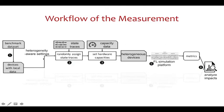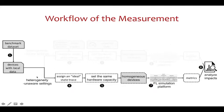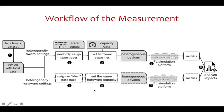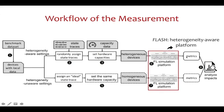For heterogeneity-aware settings, devices are assigned various state traces and hardware capacities using the aforementioned data. For heterogeneity-unaware settings, devices are assigned an ideal state trace making them always available for training and never drop out. What's more, they are also set to have the same hardware capacity. We run both settings separately and compare the output metrics to analyze the impacts of heterogeneity.